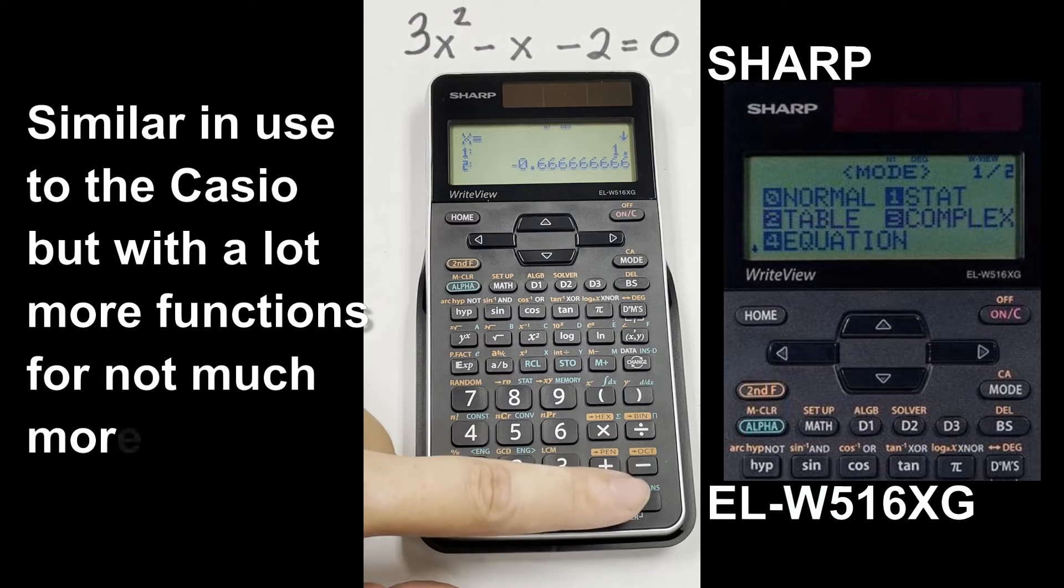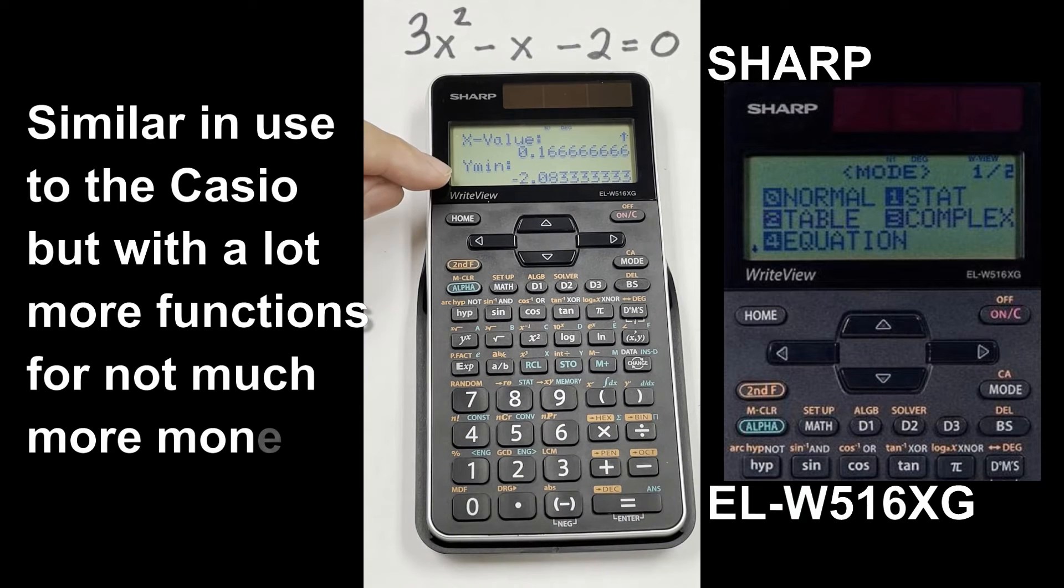And then also if you hit equal again, you are going to get the X and Y values for the vertex, and it tells you that it's a minimum. That's amazing!